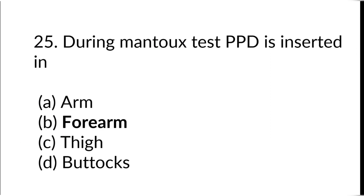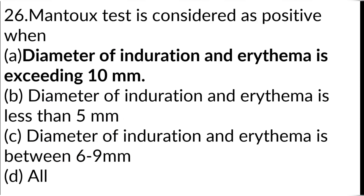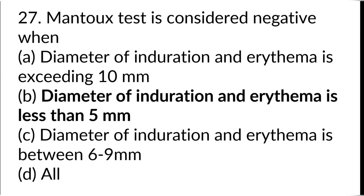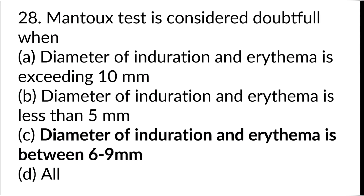During the Mantoux test, PPD is inserted in the forearm as an intradermal injection so that any reaction can be visible. The test is considered positive when the diameter of induration is exceeding 10 mm, i.e., when it exceeds 1 cm. It is considered negative when the diameter is less than 5 mm, and doubtful when the diameter is between 6 to 9 mm.